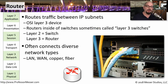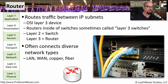If a device is a router, it's forwarding traffic between different IP subnets and making forwarding decisions based on the destination IP address in the IP packet. If it's a switch, we're making forwarding decisions based on a MAC address. That's why we refer to routers as Layer 3 devices and switches as Layer 2 devices.